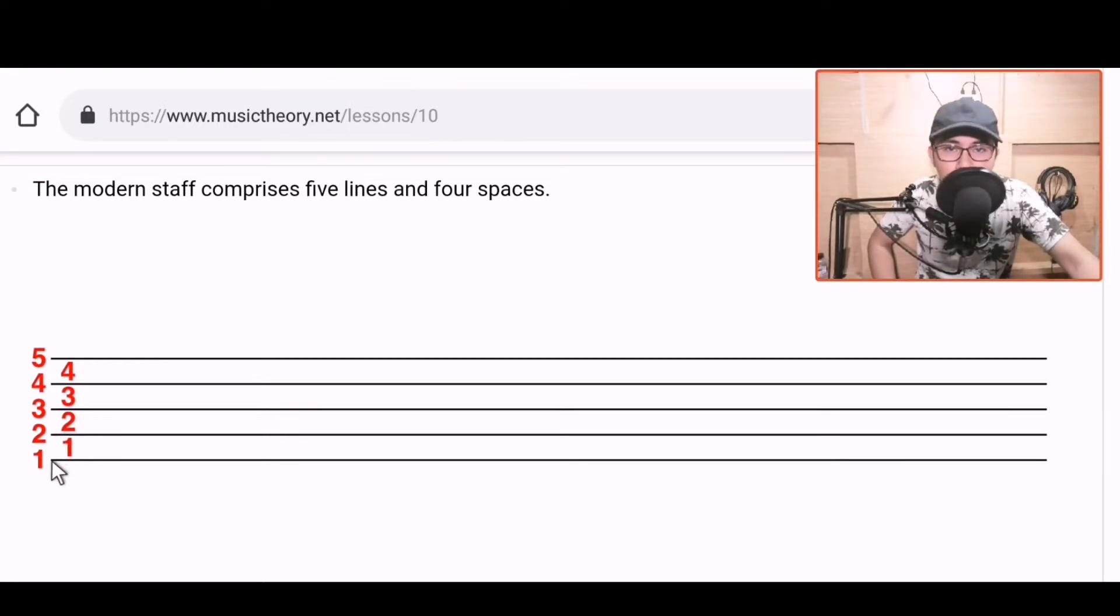Here it shows the numbering: one, two, three, four, five lines. And we have four spaces. Four in between the lines. One, two, three, and four. Always remember guys, the staff has five lines and four spaces.